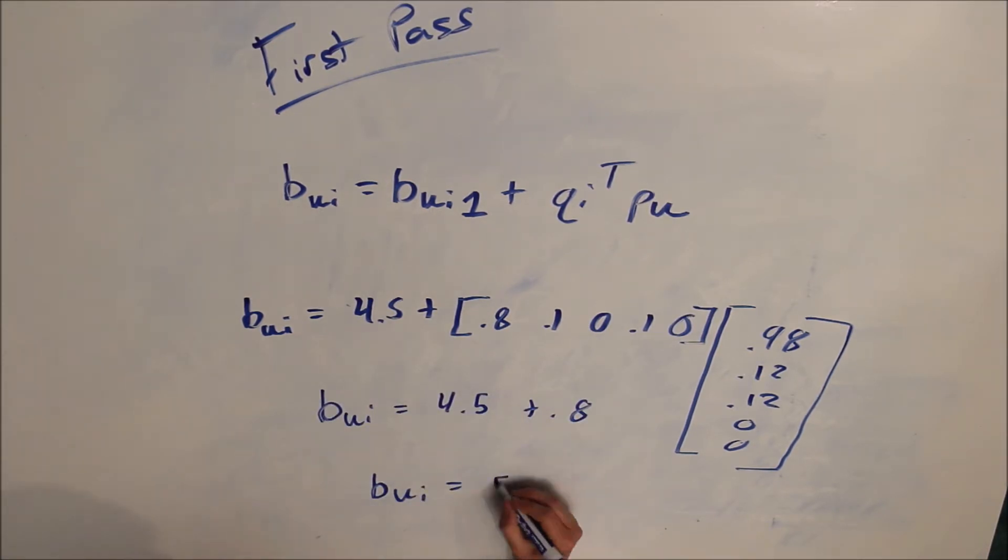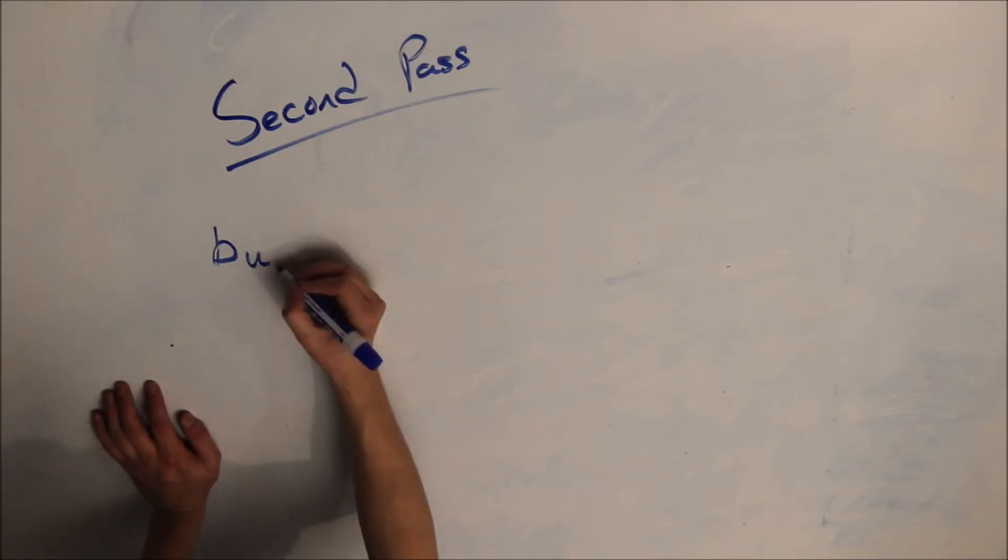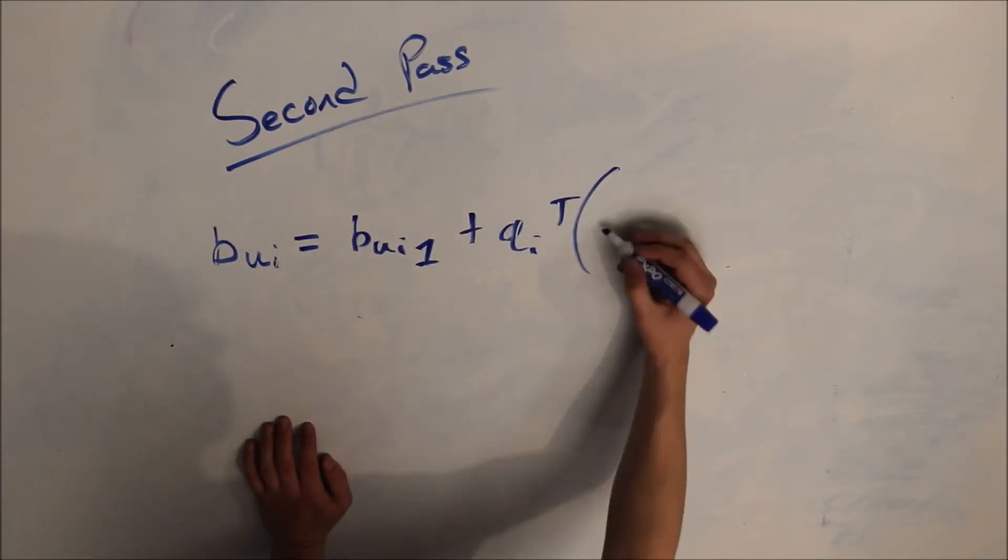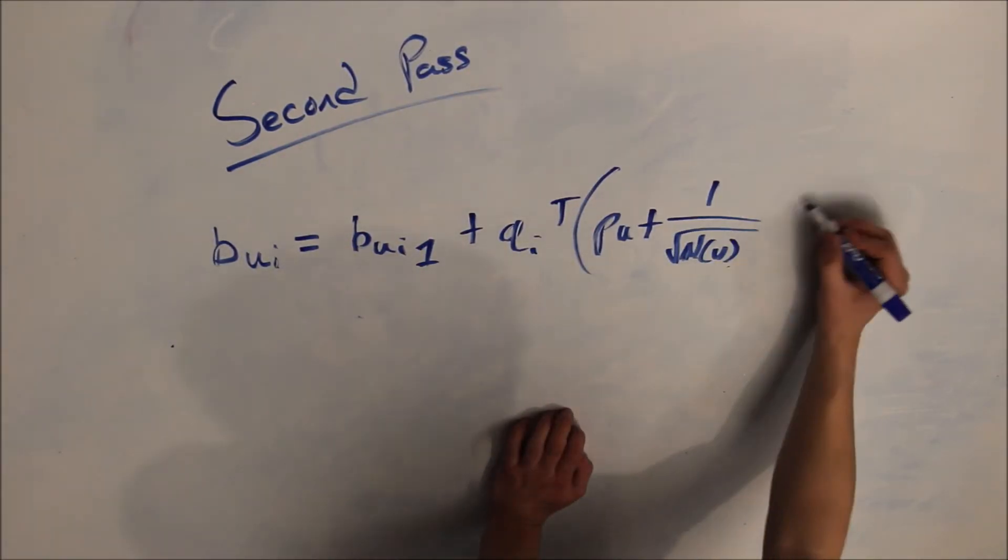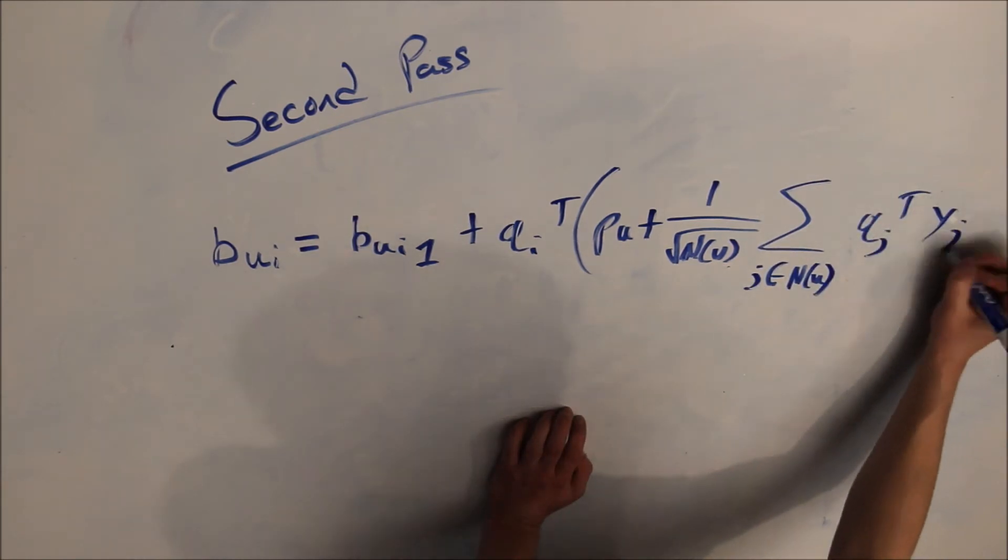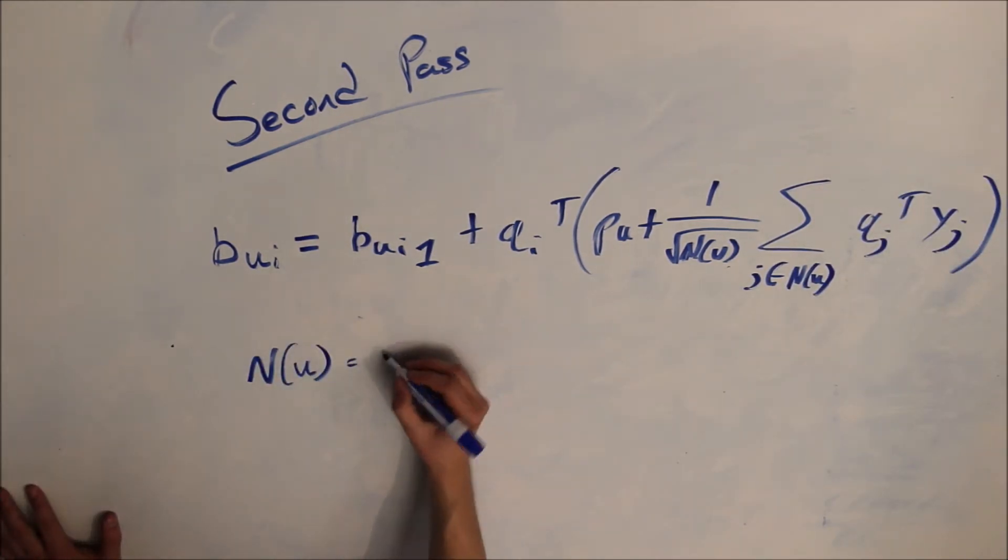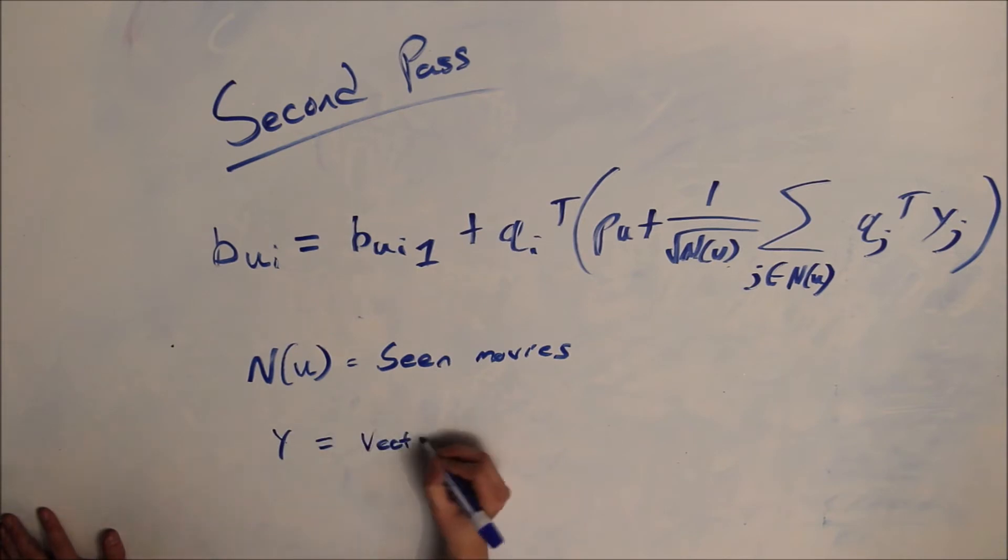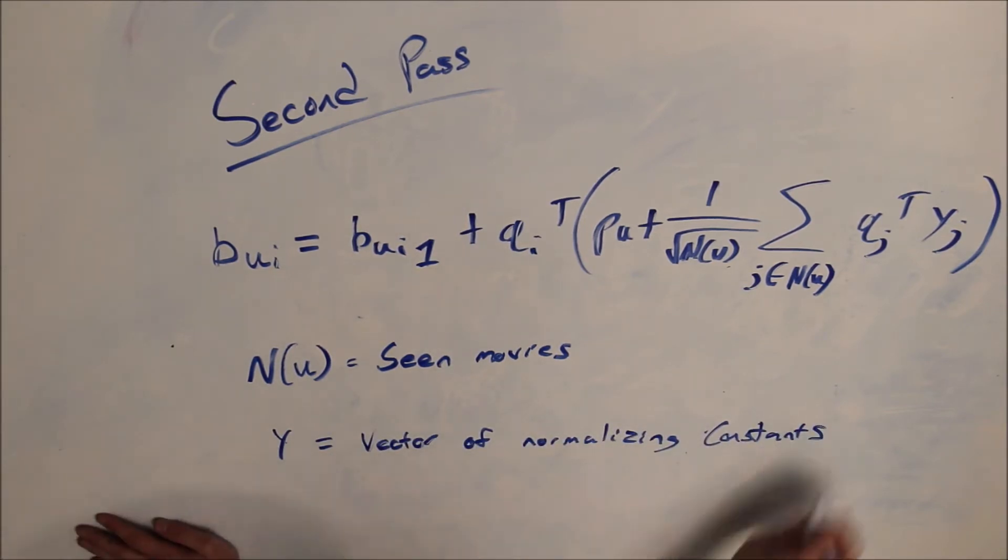However, this is still not what we're looking for, surprisingly. The reason why is that it's not matched back to what the user rated the movie. To do this, we need to look at the user's past history and adjust the algorithm from there. We do this by adding a summation of learning constants based on the user's history of scores. We also include a set of movies having been seen, NU.